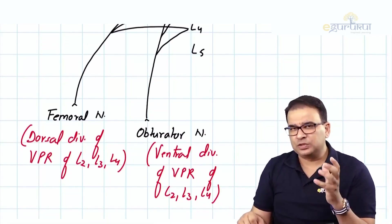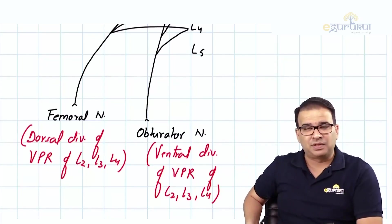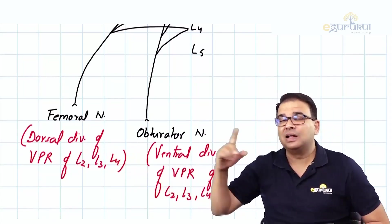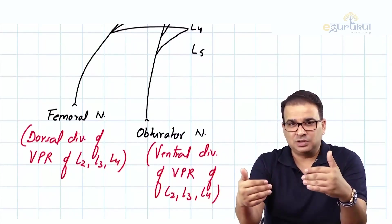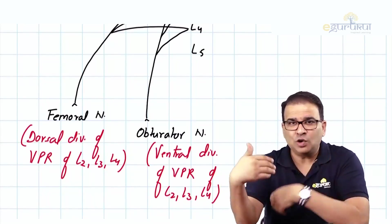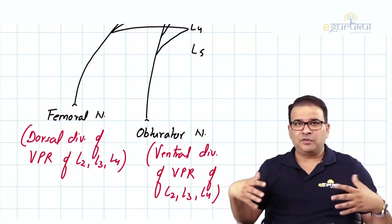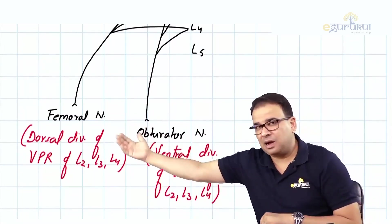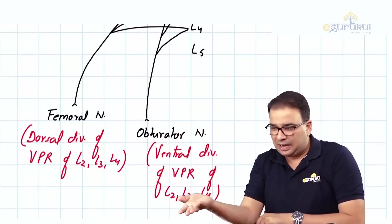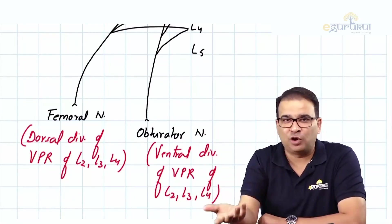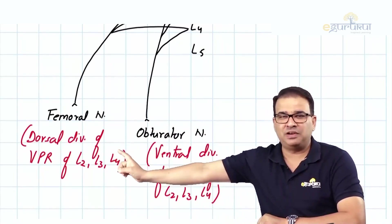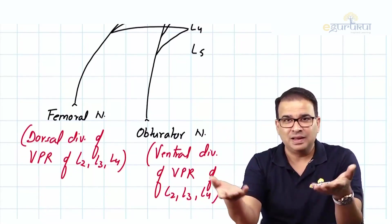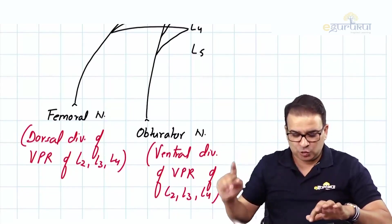This may confuse some of you — the femoral nerve supplies the anterior compartment yet comes from the dorsal division. The answer lies in embryology: developmentally, the anterior compartment of the thigh was not originally anterior. The lower limb rotates internally, so what was originally more posterior later came to the front with rotation. The division of the nerve doesn't change, so it remains the dorsal division of the ventral primary rami, even though it now supplies the anterior compartment.